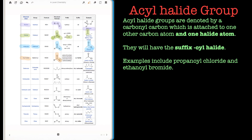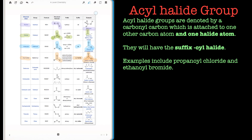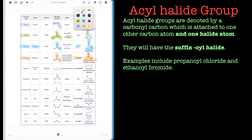The next group are the acyl halides or the haloformyl group, and these normally have the suffix '-oyl halide'. An example of that would be ethanoyl chloride as denoted here. As you can see, the name actually tells you a lot about the functional groups present in the molecule.